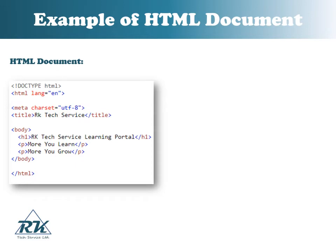The html element is the root element of an HTML page. The lang attribute defines the language of the document. The meta element contains meta information about the document. The charset attribute defines the character set used in the document. The title element specifies a title for the document.